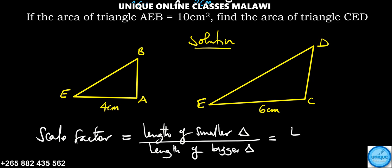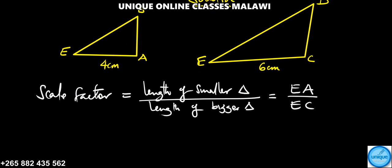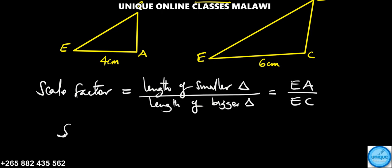At this time we are referring to EA versus EC. In that case, we can write our scale factor as EA, the 4 centimeters, and the EC that's 6 centimeters.